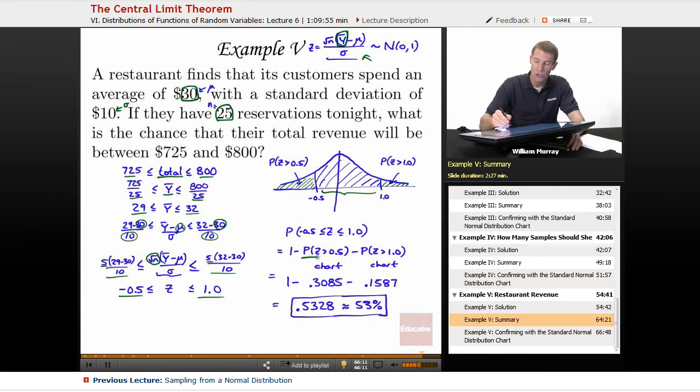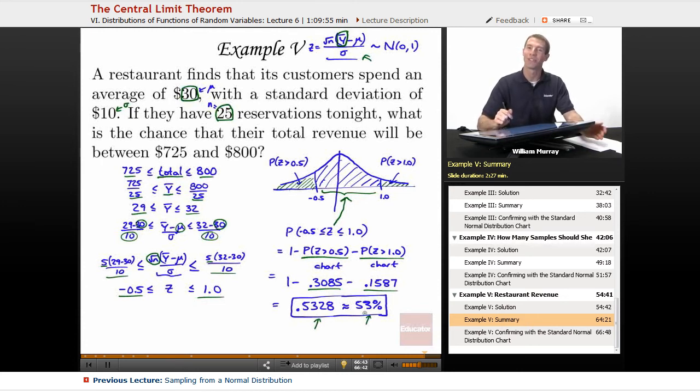So what I'll do is I will look up the two different tails there and subtract them off from one. And that'll give me this probability in the middle that I'm really looking for. I'll confirm those on the next page with the chart. It's 0.3085 and 0.1587. And once I look those up, I can drop them back into the calculation and just reduce it down to 0.5328, which is about 53%. So that's my probability that my restaurant is going to make between $725 and $800 tonight.